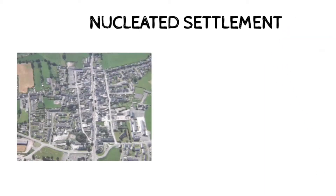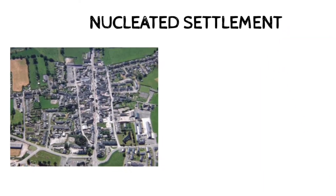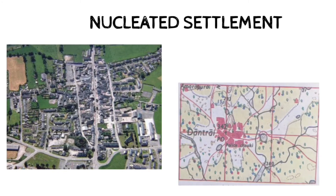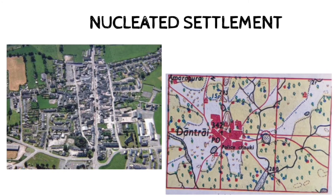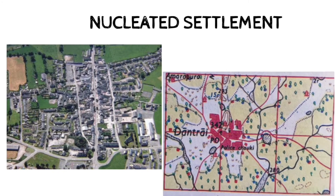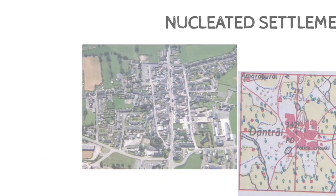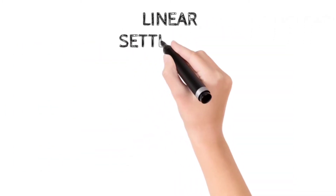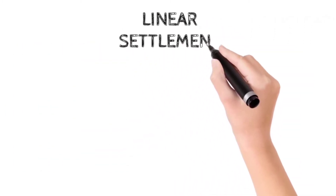The first settlement pattern is the nucleated pattern, which develops when buildings or houses are constructed very close to each other in a compact manner, with a post office, hospital, school, temple, etc. This is generally seen in areas favoring the growth of settlement, like near a source of water or communication routes such as roads or railways.